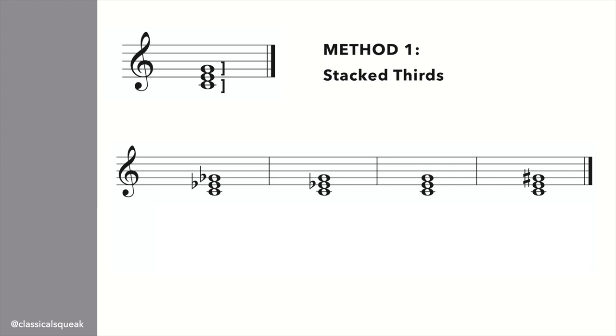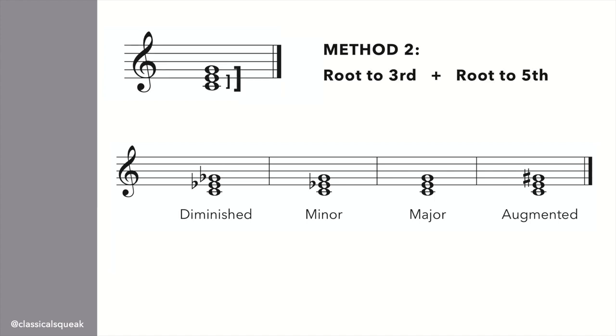Out of these triads, the smallest is diminished with stacked minor thirds, minor is minor third and major third, major is major third and minor third, and augmented is stacked major thirds. Another way to see this is building by third and fifth from the root. For diminished triad, this means a minor third and diminished fifth, minor is minor third and perfect fifth, major is major third and perfect fifth, and augmented is major third and augmented fifth.